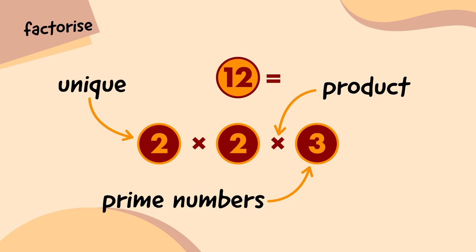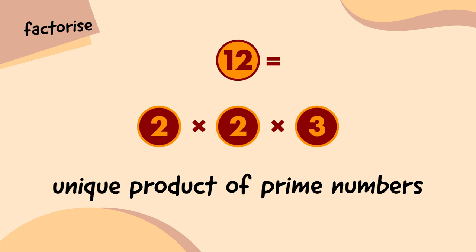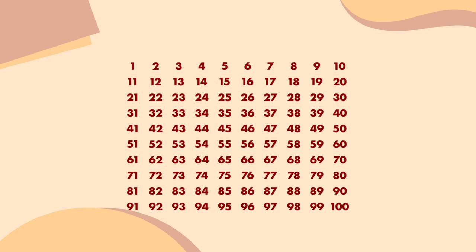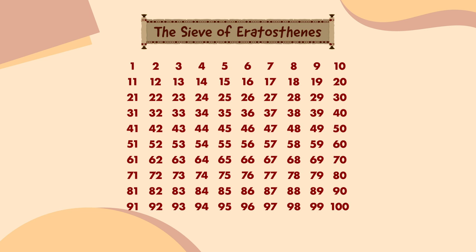Here are the numbers 1 to 100. Let's find out which of these numbers are prime numbers. To do that, I'm going to use something called the Sieve of Eratosthenes, which comes from ancient Greece around 2,000 years ago. I'm going to go through each number one by one and eliminate other numbers that can be divided by it. I'm going to ignore 1 though — 1 is actually a special case because it's the only number with one factor, so it isn't a prime number.